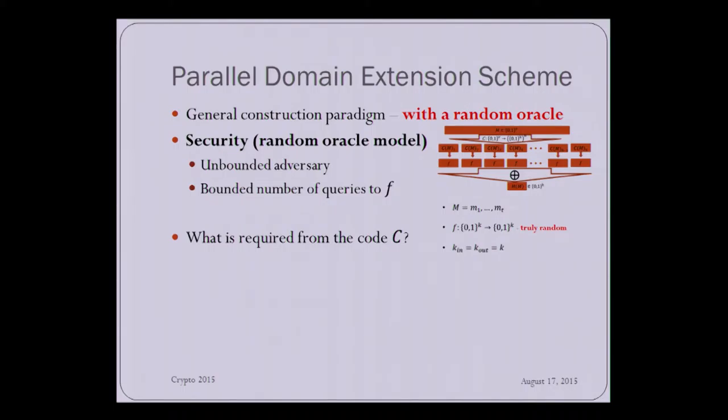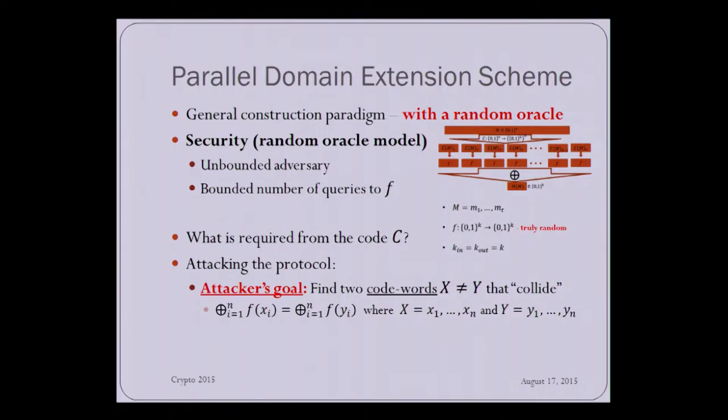Maybe the code c is not required at all. And how do we understand that? Again, by way of examples, by way of attacking the scheme. So let me remind you that to attack the scheme, the adversary is required to come up with two distinct code words that collide on the scheme. Namely, if you xor all the f applied to all the blocks of x, and you xor all f applied to all the blocks of y, you get the same result. And the reason I can consider code words is because giving two colliding code words, an unbounded adversary can recover the original messages without querying the oracle at all.